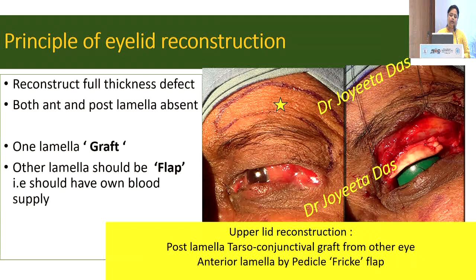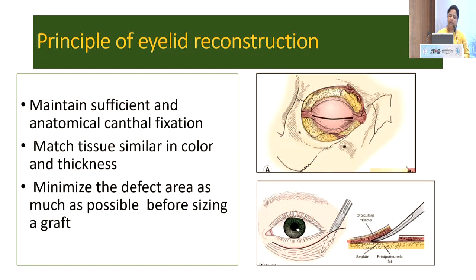The principle of eyelid reconstruction: if we are planning for reconstruction of a full thickness lid defect — that is, both anterior and posterior lamellae are absent — then if we use a graft for one lamella, the other lamella should be a flap, meaning it should have its own blood supply. Here you can see the example: the posterior lamella has been grafted from the upper lid tarsoconjunctiva, and the anterior lamella is formed by a pedicle flap. The other principle is you should maintain sufficient canthal fixation.